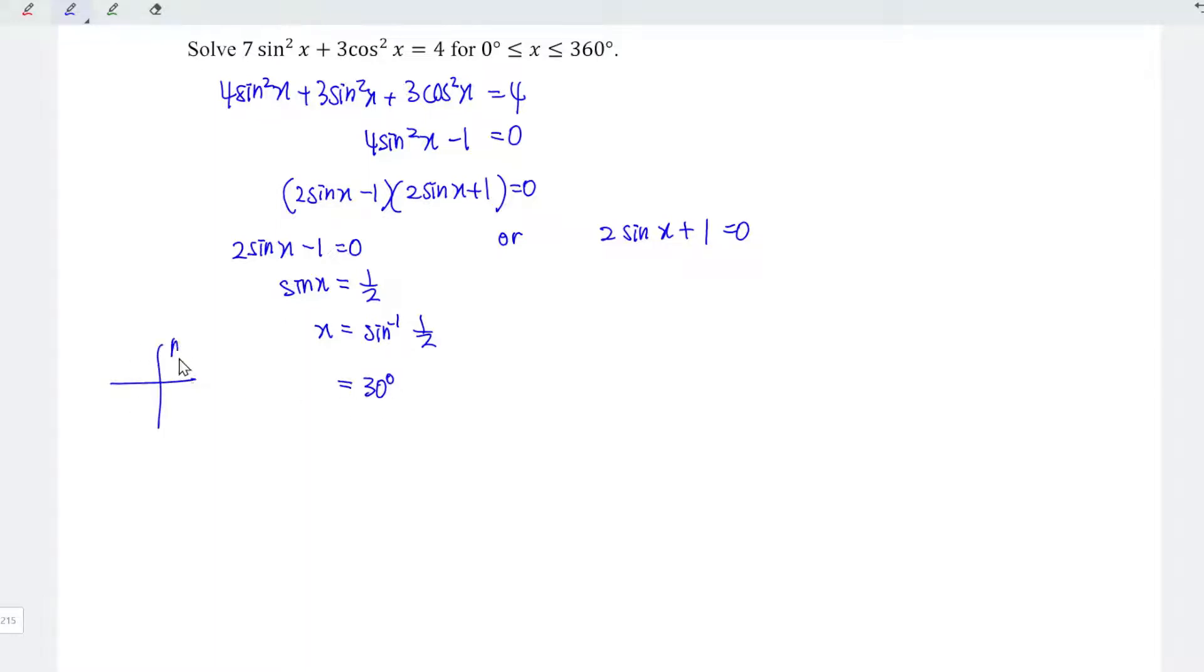Recall that we have all sin tan cos all. To obtain positive ratio of sin function, which means that we should have the first and the second quadrant. 30 degrees is in the first quadrant. So we have that already, and now we should move to the second quadrant.